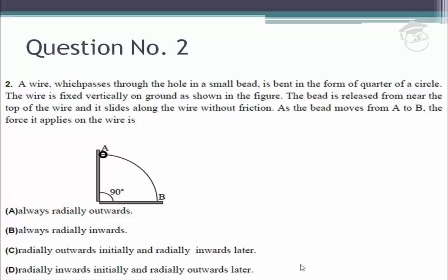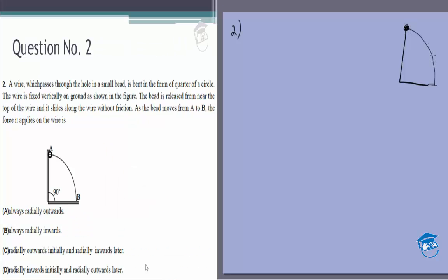We are asked about the force that the bead applies on the wire. This is the first source of error that some students might make. They might calculate the normal force on this bead and take that to be the answer.